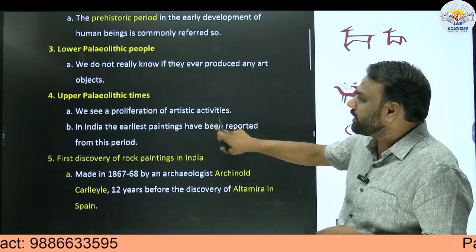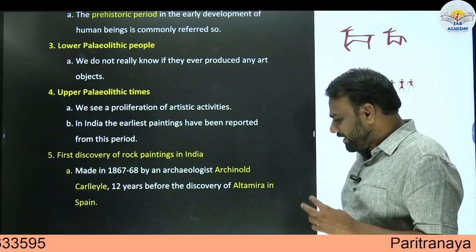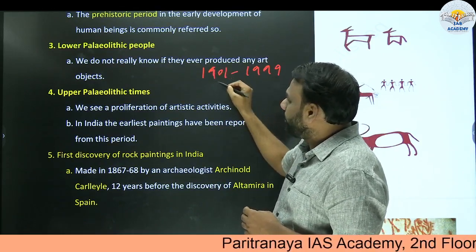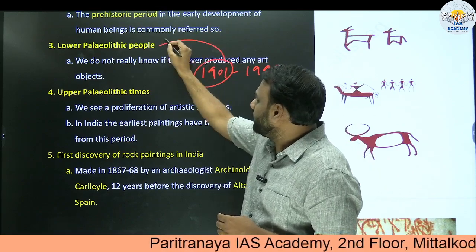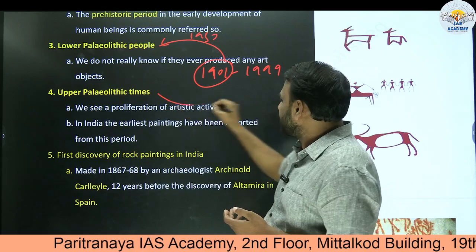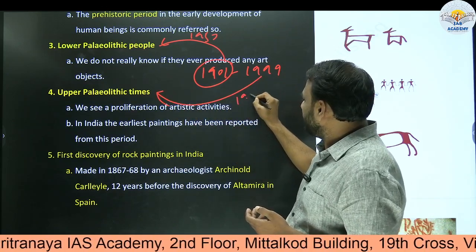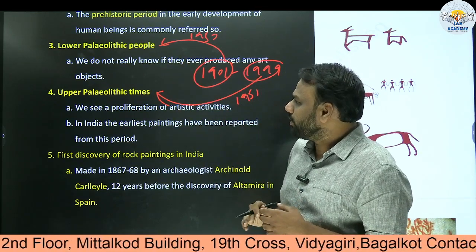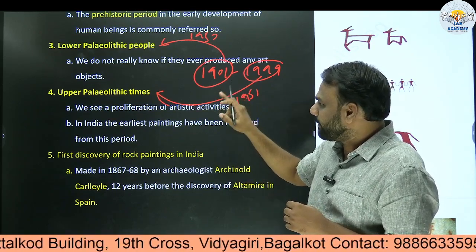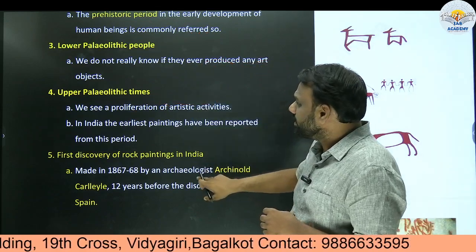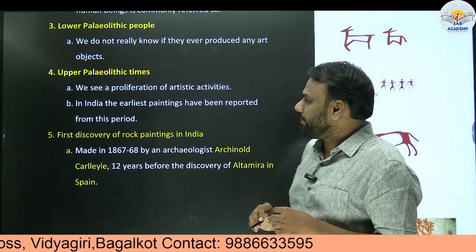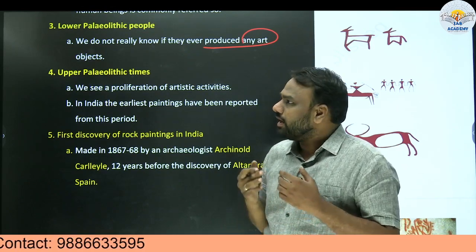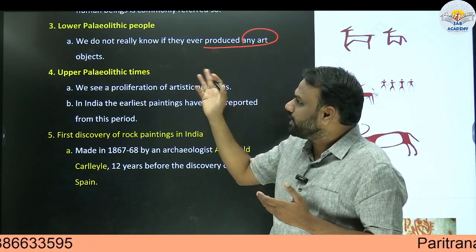There are two sub-periods: Lower Paleolithic and Upper Paleolithic. As an analogy, if a period spans 1901 to 1999, the lower half would be 1901 to 1950 and the upper half 1951 to 1999. When it comes to Lower Paleolithic times, we do not really know if they ever produced any art objects - we have no proof of paintings or artwork produced by Lower Paleolithic people.